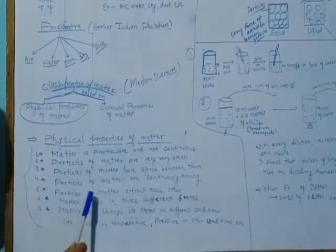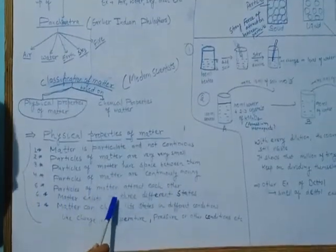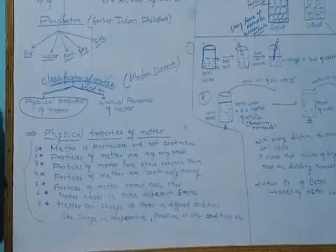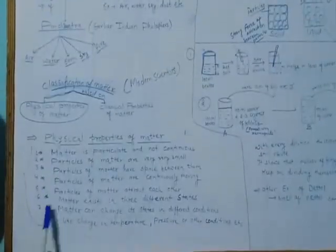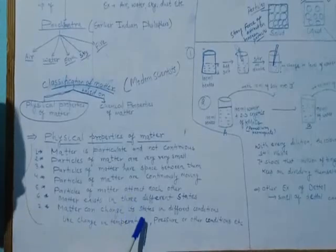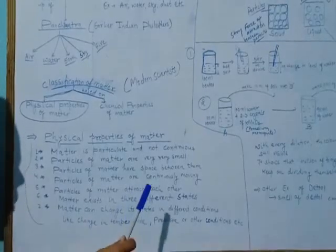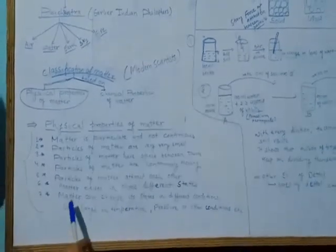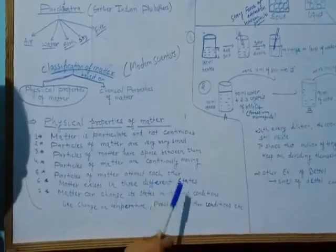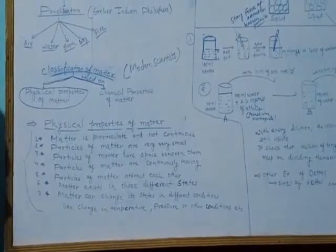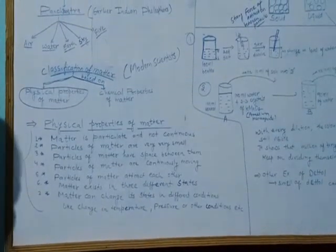Fifth, particles of matter attract each other. Sixth, matter exists in three different states — solid, liquid, and gas. Seventh, matter can change its states under different conditions like change in temperature, change in pressure, or any other condition.